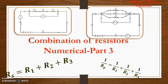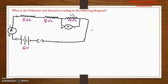We discussed different types of connections and in today's video we are going to discuss about how current and voltage are distributed in different types of connections — that means in a combination of parallel and series connections, how the current is given to each resistor or how the potential difference is given to each resistor. So let us start understanding that with a simple question: What is the voltmeter and ammeter reading in the following diagram?